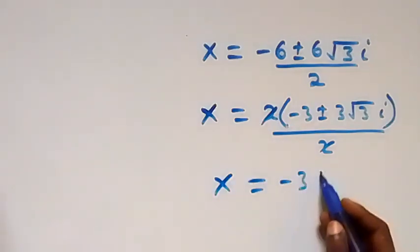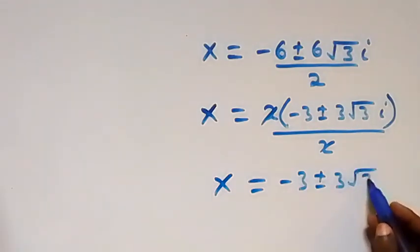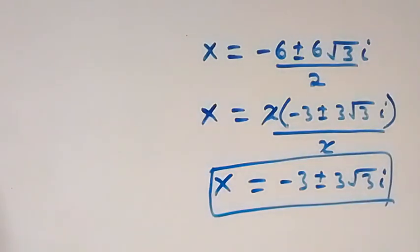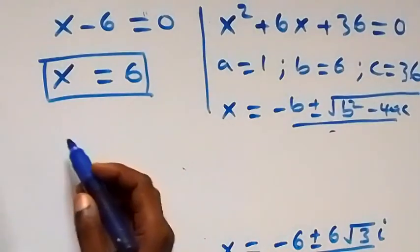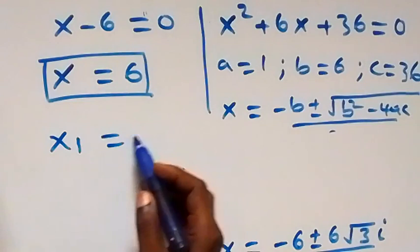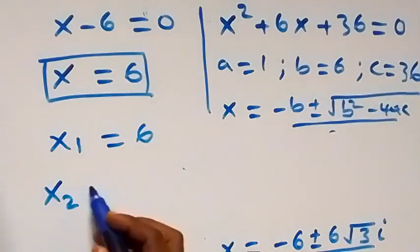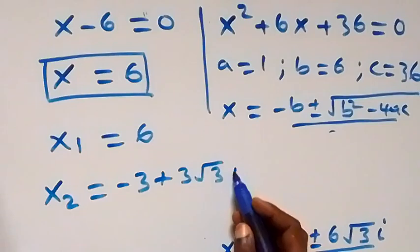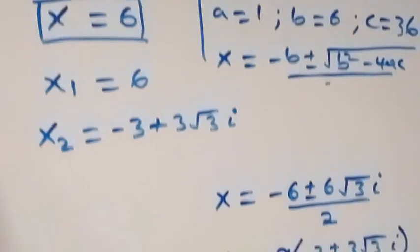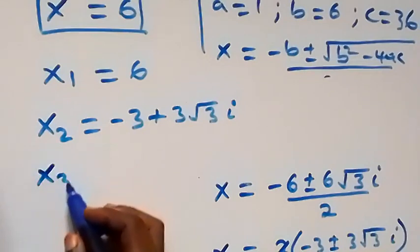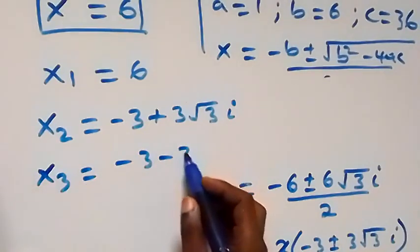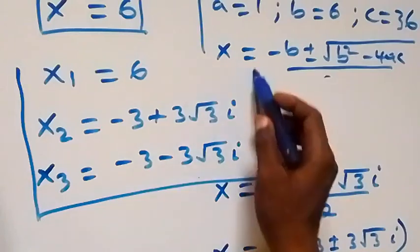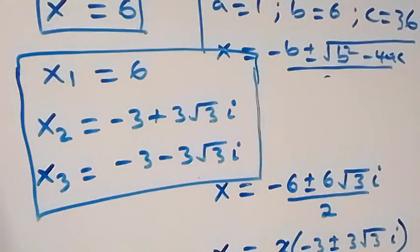So we have two complex solutions from the quadratic. All together, we have three solutions: x₁ equals 6, x₂ equals negative 3 plus 3√3 i, and x₃ equals negative 3 minus 3√3 i. That's one real solution and two complex solutions.